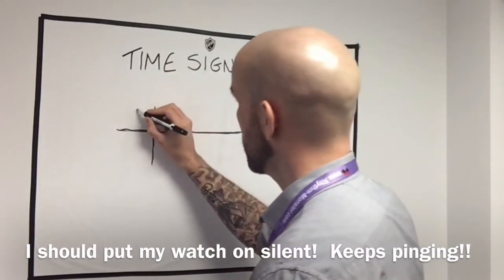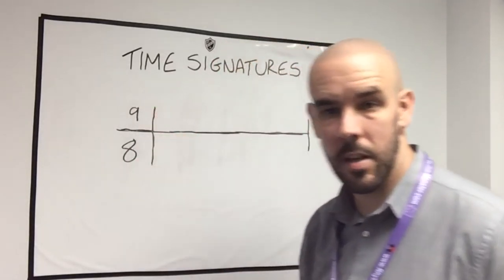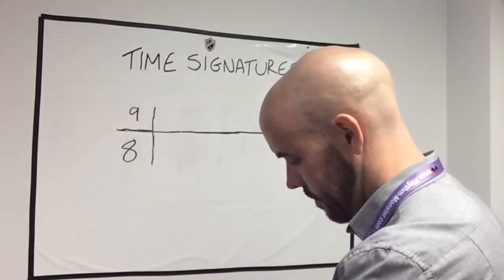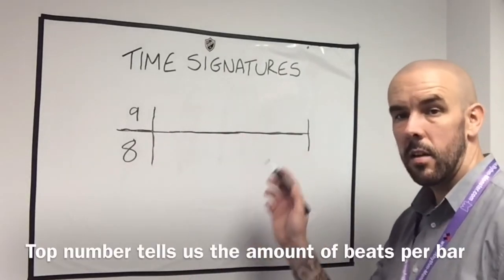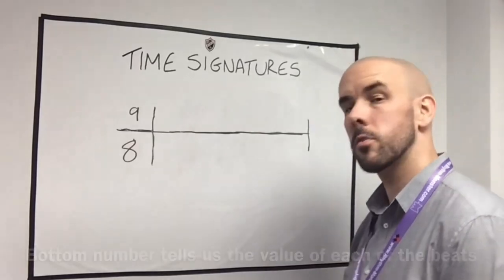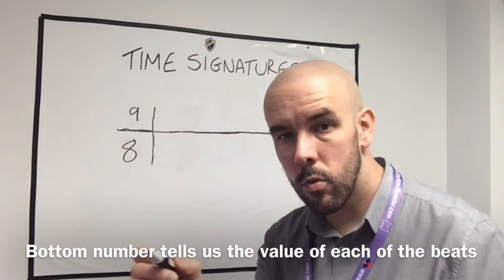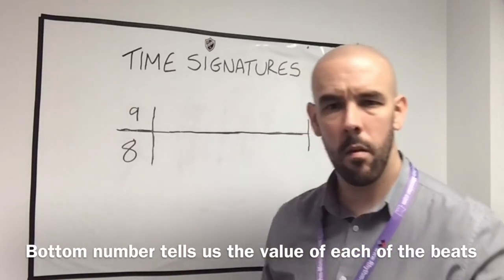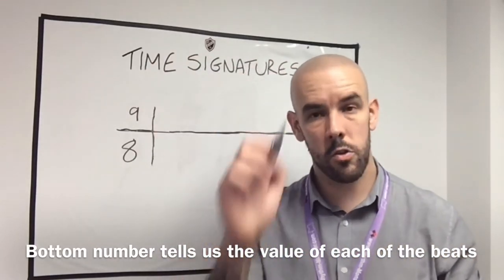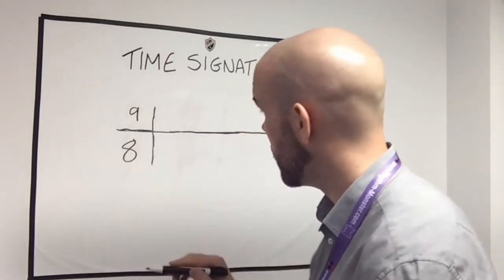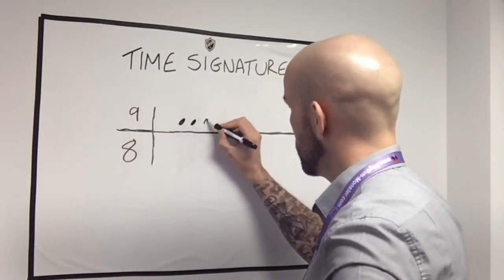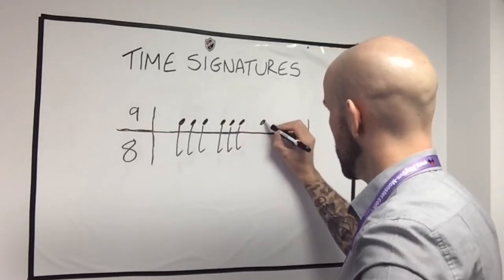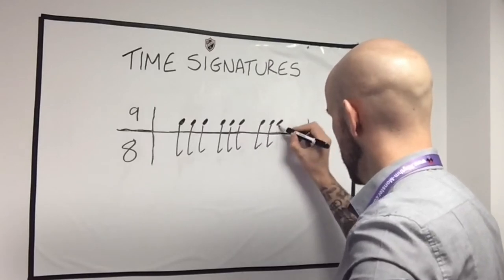This time we're going to do 9-8, using the exact same theory. The first number tells us the number of beats per bar — nine — and it's the same eight as before, so it's going to be quavers. Working through the duration table: whole note, minim half note, crotchet quarter note or four, quaver eighth note. So there need to be nine quavers in this bar: one, two, three, four, five, six, seven, eight, nine. Nine quavers.